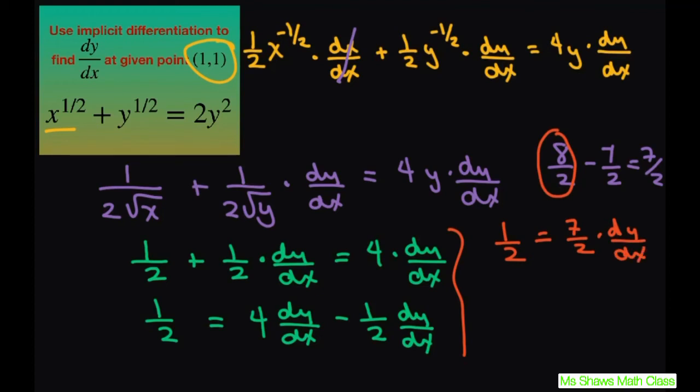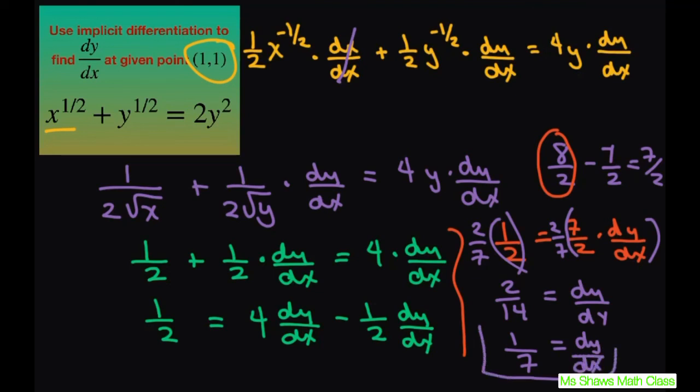Now multiply both sides of the equation by 2 7ths. I'll just put the 2 7ths here. So this is going to give you 2 14ths equals dy dx. Just multiplying both sides of the equation by 2 7ths. Alright, and this reduces to 1 7th equals your derivative, derivative of y with respect to x. And that is your final answer.